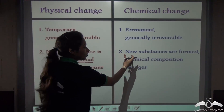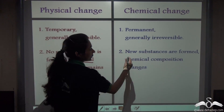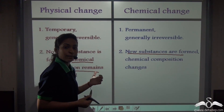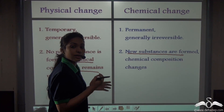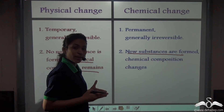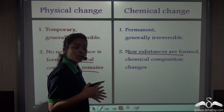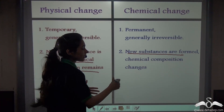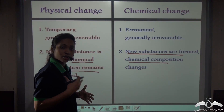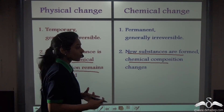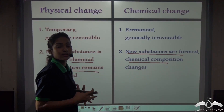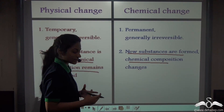Now let's see about chemical changes. New substances are formed when a chemical change takes place. In the case of burning of wood, does that wood remain the same? No — it turns into ashes. So the chemical composition of that wood changed into ashes. New substances are formed whenever there is a chemical change taking place.